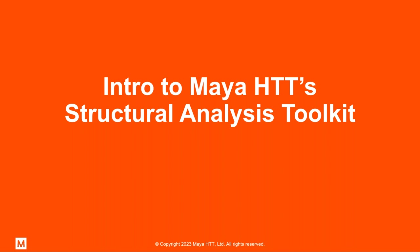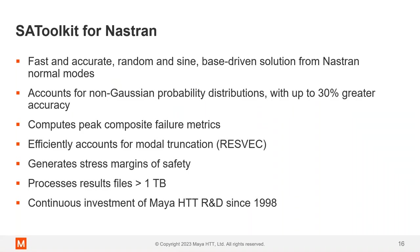So let's intro the toolkit here. The toolkit is for Nastran, it is fast and accurate random and sine base driven solution for Nastran normal mode. So you're starting with an OP2 the output file from a solution 103 for Nastran. That's your normal mode solution. It accounts for the non Gaussian probability distributions. It computes peak composite failure metrics. That's a key differentiator from our tool and many other random vibe processors. It can efficiently account for modal truncation if you're familiar with Nastran and the Resvec option.